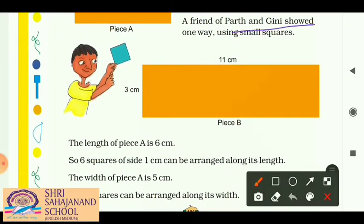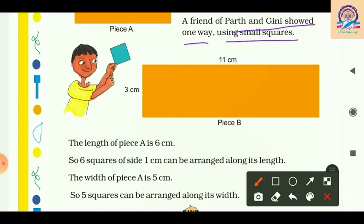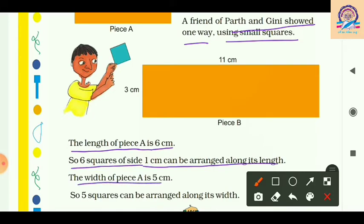A friend of Parth and Guinea showed another way using small squares as an activity. The length of Piece A is 6 centimeter, so 6 squares of side 1 centimeter can be arranged along its length. The width of Piece A is 5 centimeter, so 5 squares can be arranged along its width.